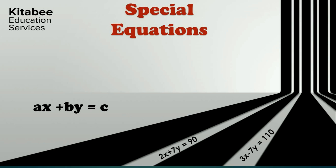Here, we only know one equation and some more information is given that will restrict the number of solutions. In linear equations, we have two equations for two variables, and so on solving them, we get a unique solution. But here, one may get or may not get a unique solution, but a multitude of solutions.